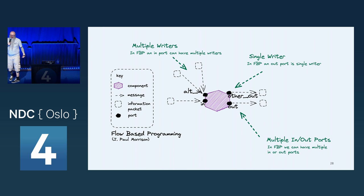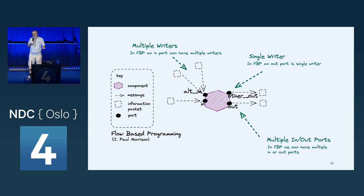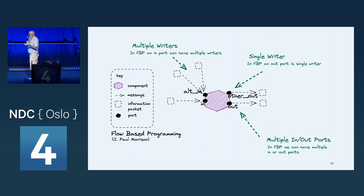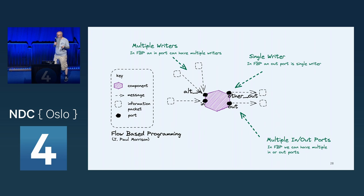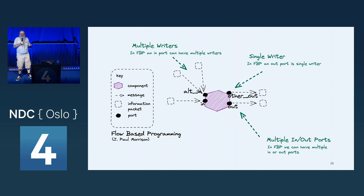Flow-based programming introduces the idea of multiple named ports. The framework handles how a port actually works — you just know you send to 'out' and receive from 'in'. Multiple writers can write to an input port, but only one thread writes to any output port internally. In about 2010, J. Paul Morrison observed that message-oriented middleware is a perfectly valid way of implementing the connectors flow-based programming described, and that flow-based programming could be seen at scale as a way of building distributed systems.